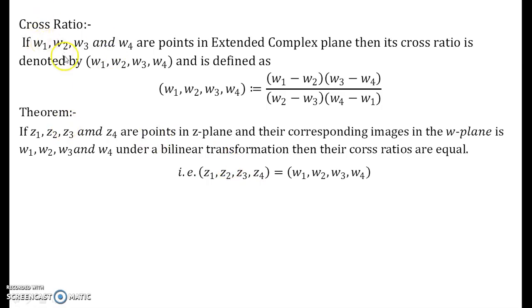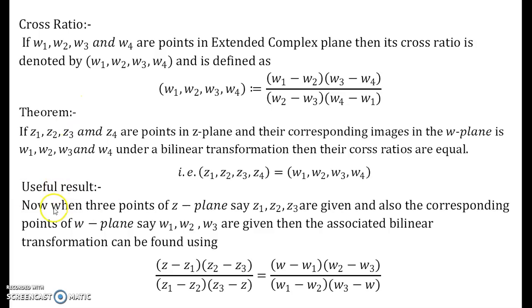Now related to this theorem and the definition above of the cross ratio that I have given here, there is an important result I would like to mention. Suppose you are given three points of z-plane and three points of w-plane and you are expected to find the associated bilinear transformation, then how can you do using cross ratio property? You can just use this result: (z - z1)/(z1 - z2) times (z2 - z3)/(z3 - z) equals (w - w1)/(w1 - w2) times (w2 - w3)/(w3 - w). It looks very big but it is very easy.